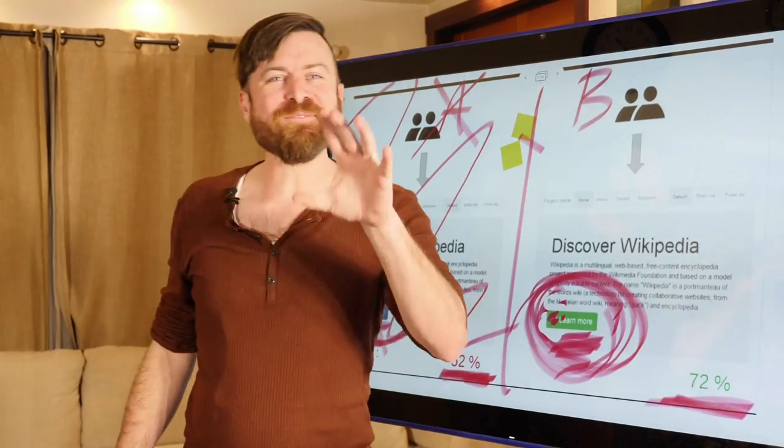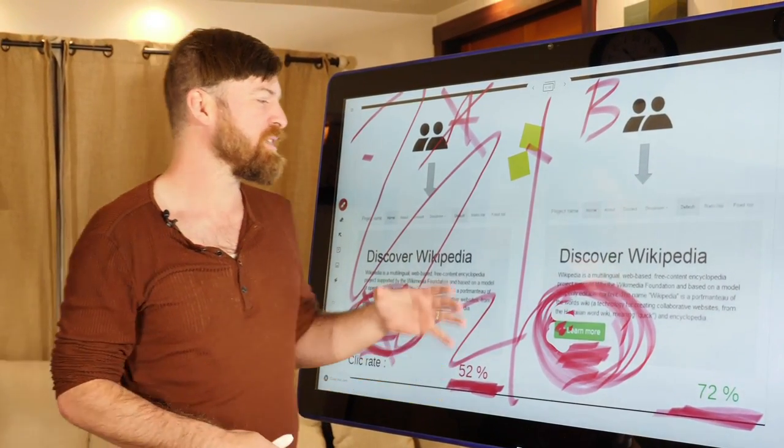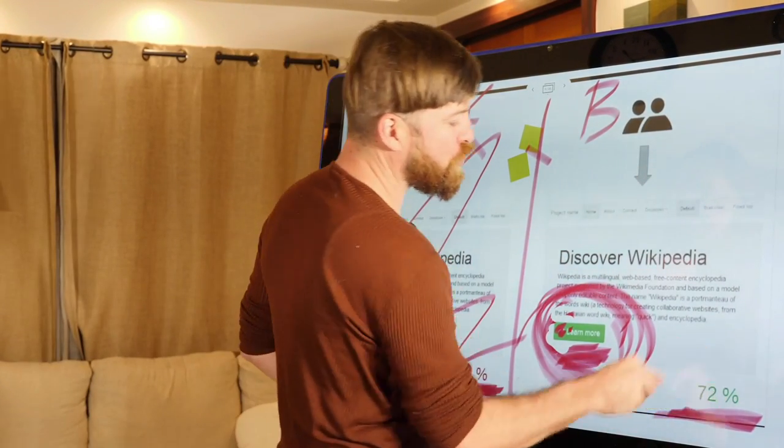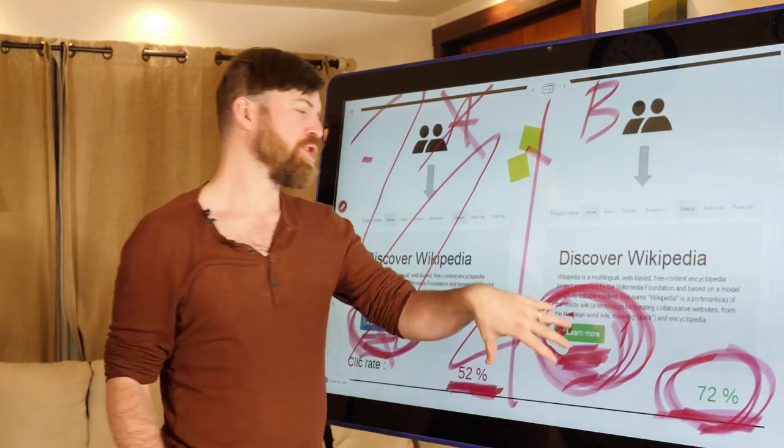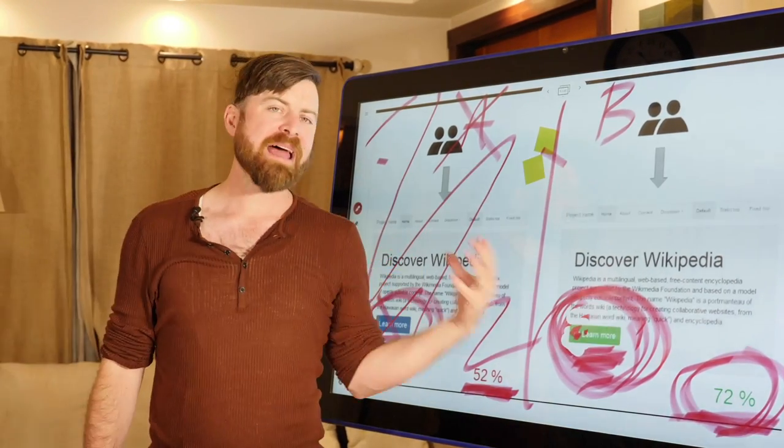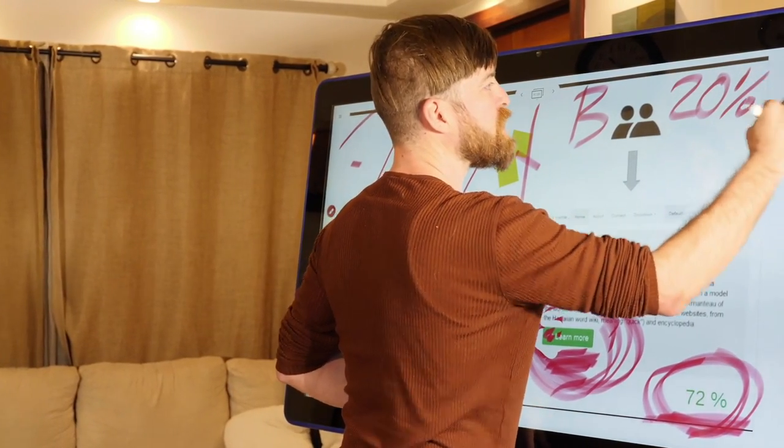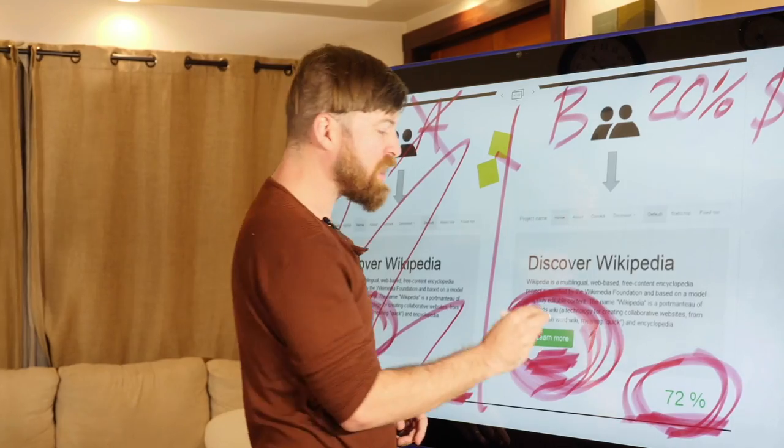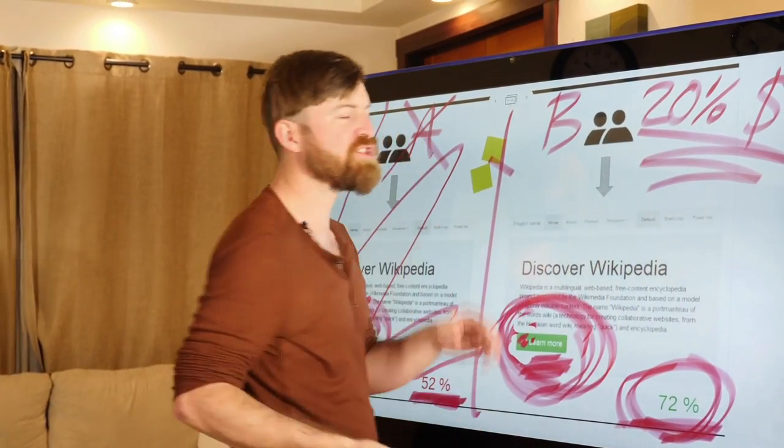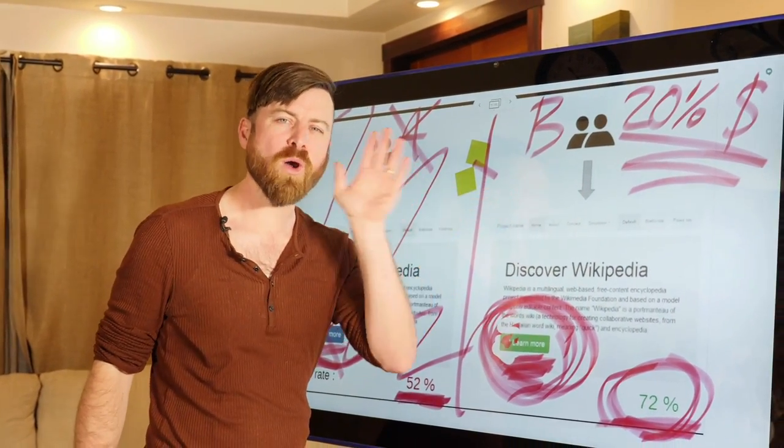But John, why is this useful? Like button colors and like figuring out ideas about why the button work better. Like why is that useful information to me? So the reason why this is useful information is actually because if you notice 20% more people signed up using this button to donate to Wikipedia, that means 20% more donations. Wikipedia just by changing the color of their button received 20% more money.